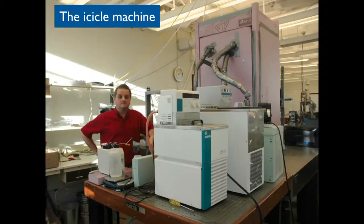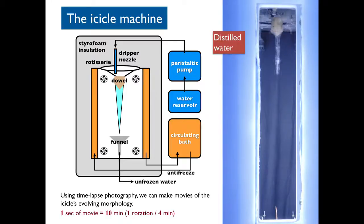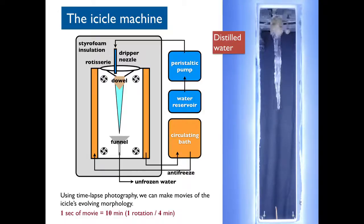Those white things in the foreground are the refrigerators, and those duct-tape-covered pipes are carrying Canadian Tire antifreeze into the machine. Inside, we pump water in very slowly at a drip, drip rate, and it lands on a dowel which has been sharpened. That dowel is on something we call the rotisserie, actually made out of a lazy susan bearing, and it rotates once every four minutes. The air in the box is maybe minus 10 to minus 15 degrees, and an icicle begins to form on that rotating dowel.